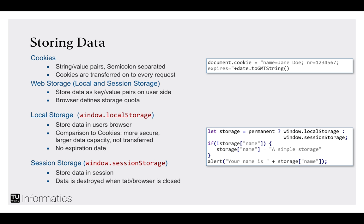There are two types: local storage, which stores data in the browser with no expiration date, and session storage, which expires as soon as you close the tab or browser. The API is the same for both — you access window.localStorage or window.sessionStorage and can assign or delete keys with values. The only difference is the ephemeral property of session storage. Local storage persists with no official expiration date, but you as a user can clear your local storage.